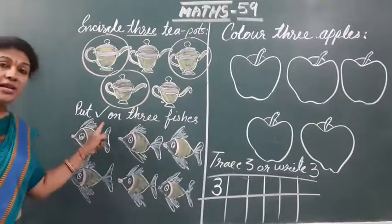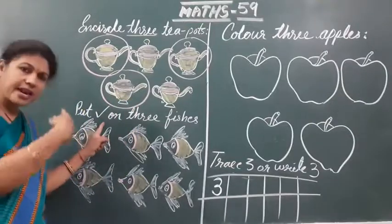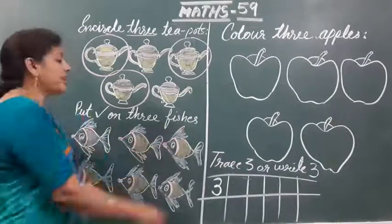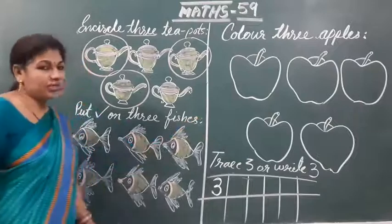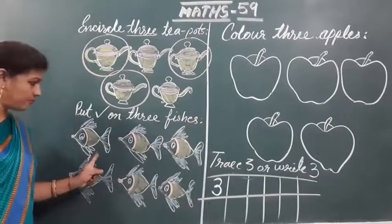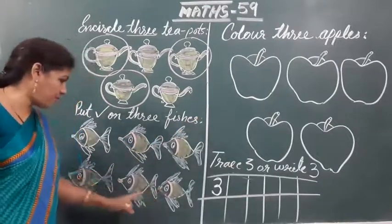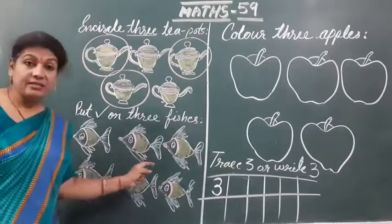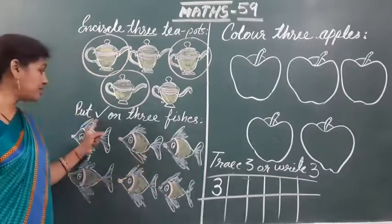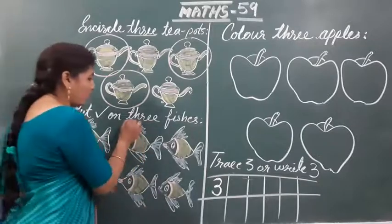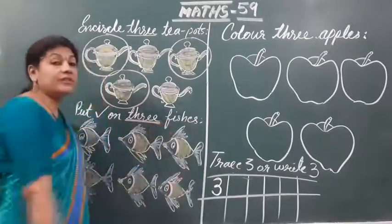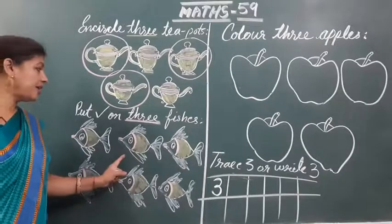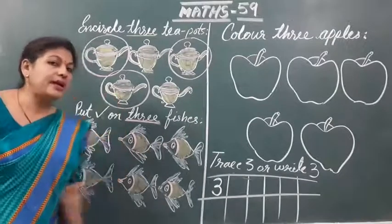Now the second question — put right. यहाँ क्या करना है? Right का sign लगाना है on 3 fishes. Already given here — but here are 1, 2, 3, 4, 5, 6 fishes given. There are 6 fishes. Then what is the choice? Put right on only 3. Only 3 लेना है हमें, और 3 लेकर ही right tick करना है।